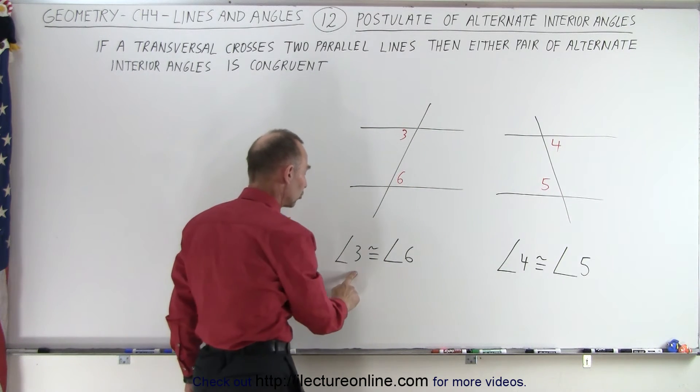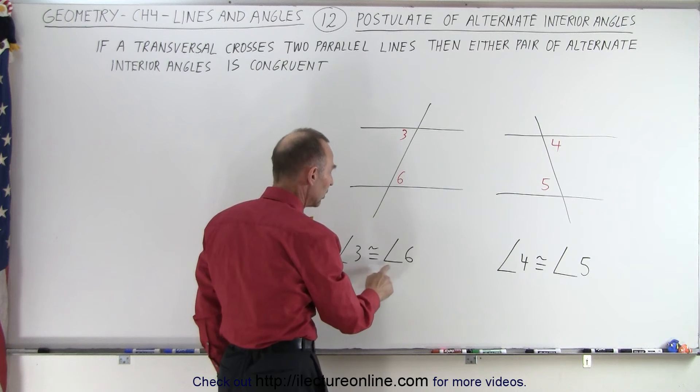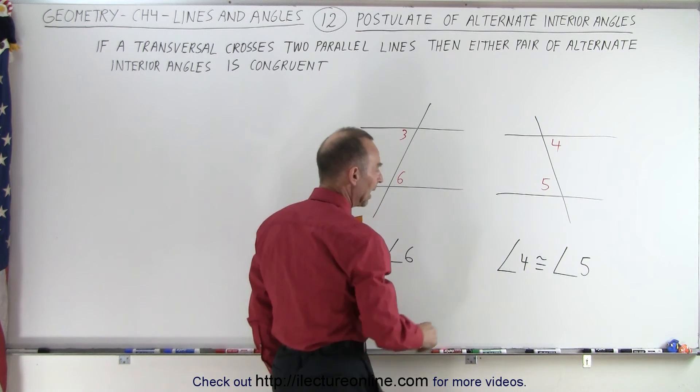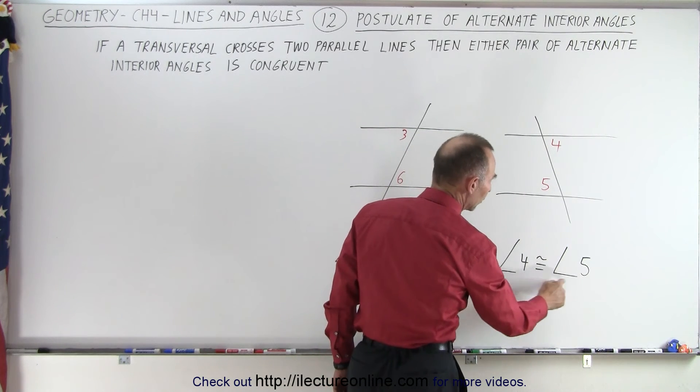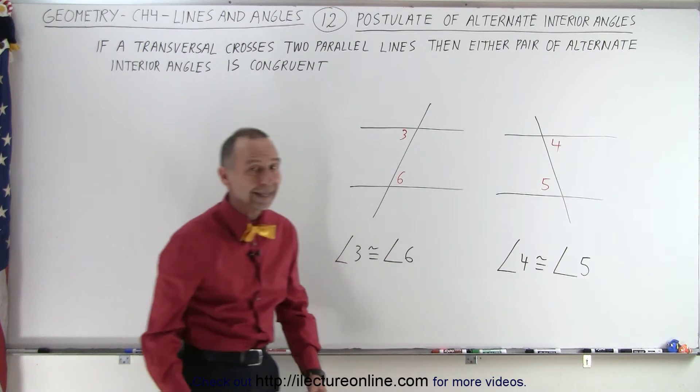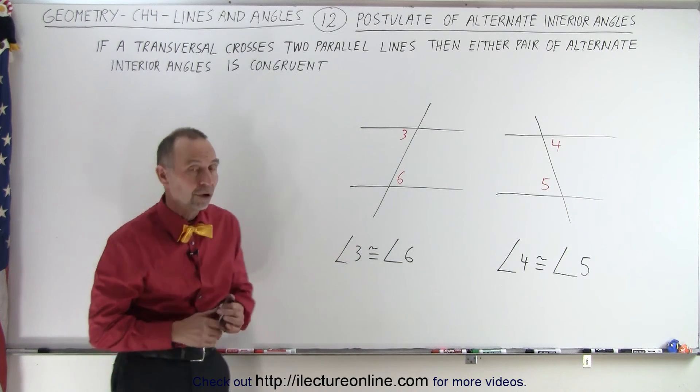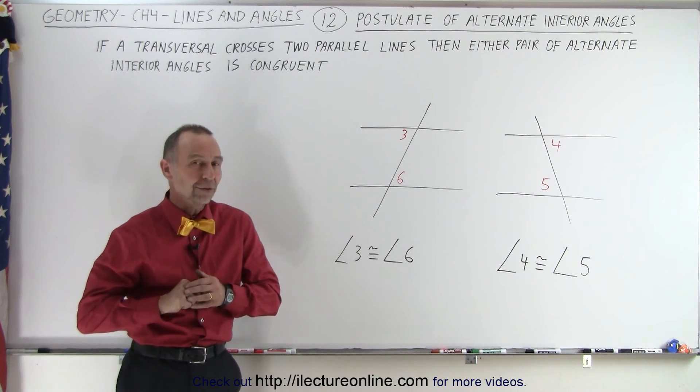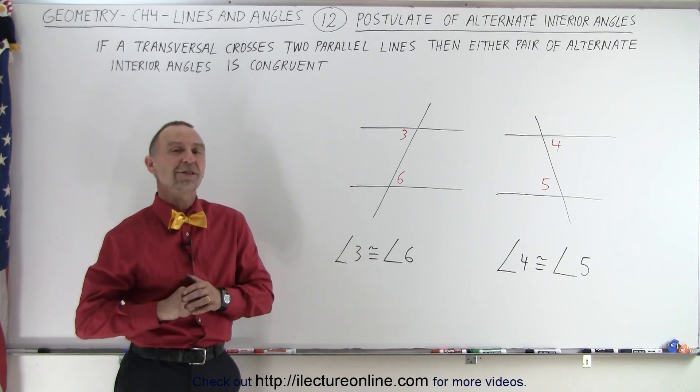And we can then say that the angle measure of angle 3 is congruent to the angle measure of angle 6 and angle measure 4 is congruent to angle measure 5. And that's what we mean by the postulate of alternate interior angles. A very handy postulate indeed.